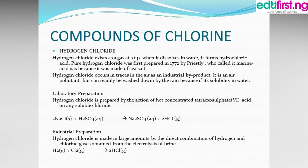Compounds of chlorine: One major compound is hydrogen chloride. Hydrogen chloride exists as a gas at STP, and when it dissolves in water it gives us hydrochloric acid. Hydrogen chloride occurs in traces in the air as an industrial byproduct. It is an air pollutant but can be washed down by rain because of its solubility in water.